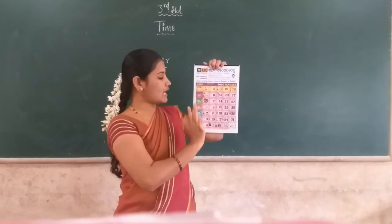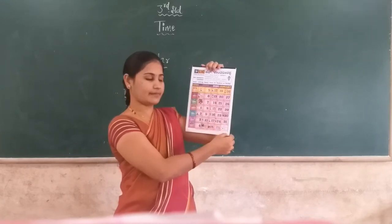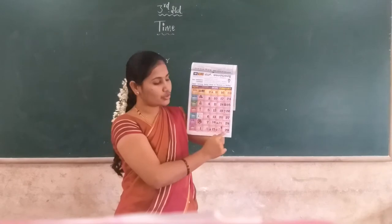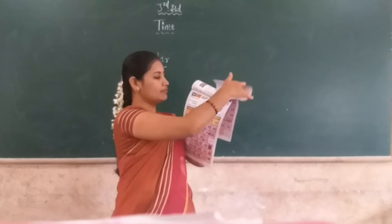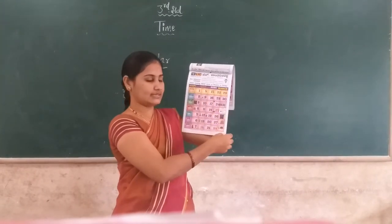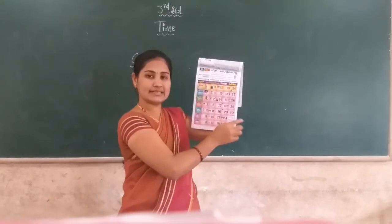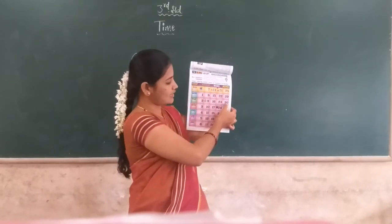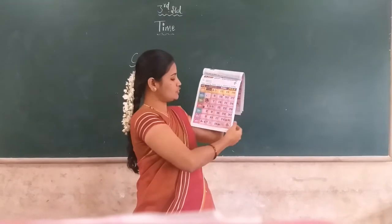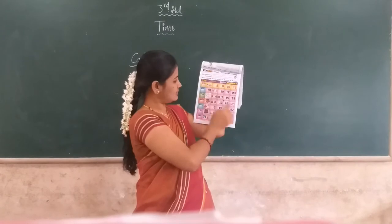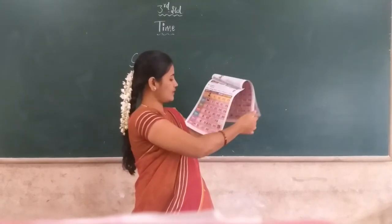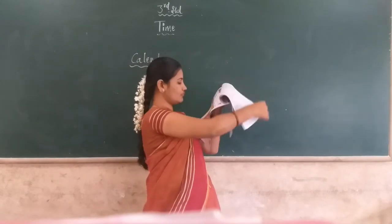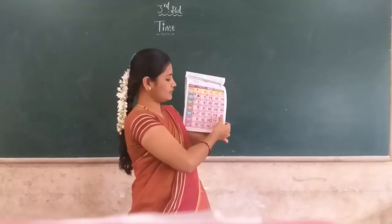This is the January month — it has thirty-one days. February has twenty-nine days. March has thirty-one days. April has thirty days. May is also thirty. June is also thirty. July, thirty-one. August, thirty-one. September, thirty. October, thirty-one. November, thirty. December, thirty-one.